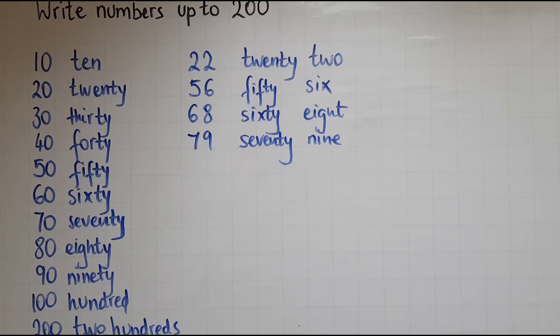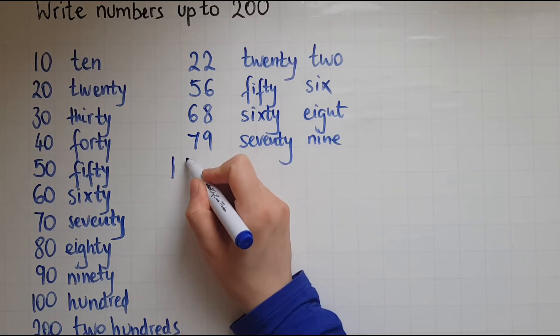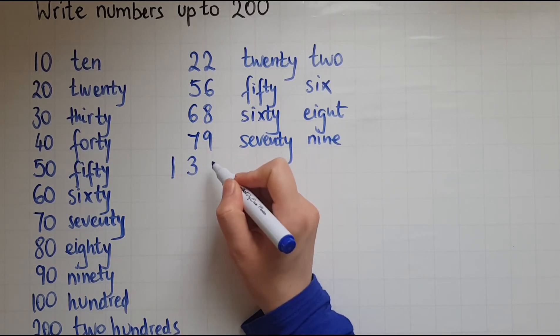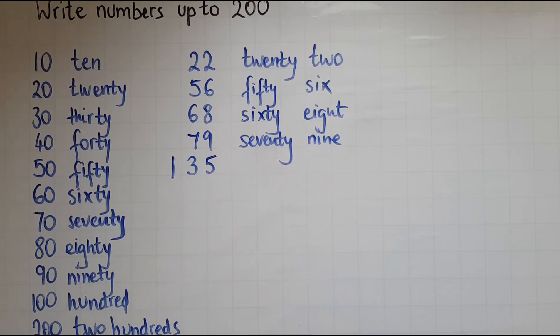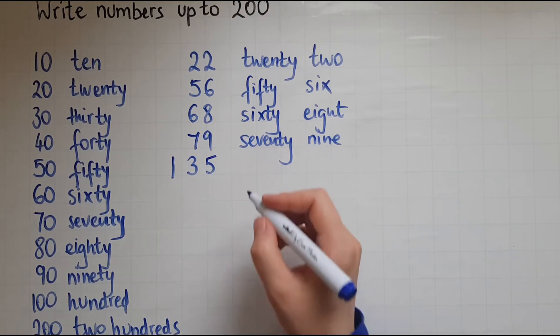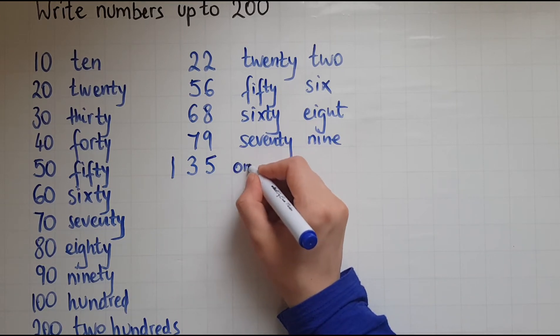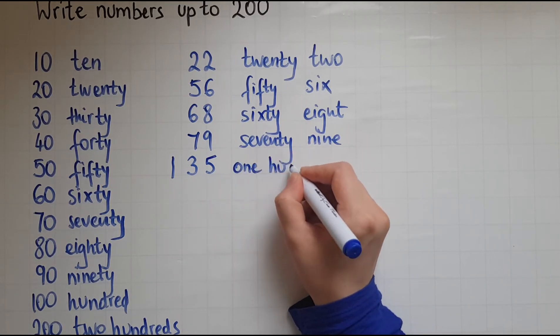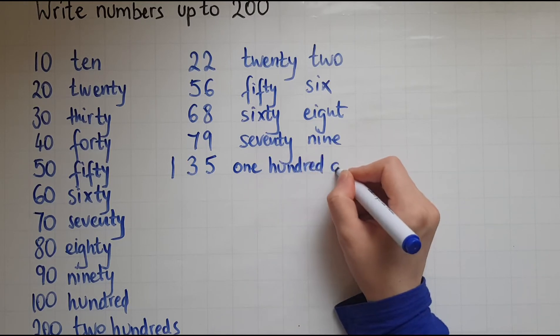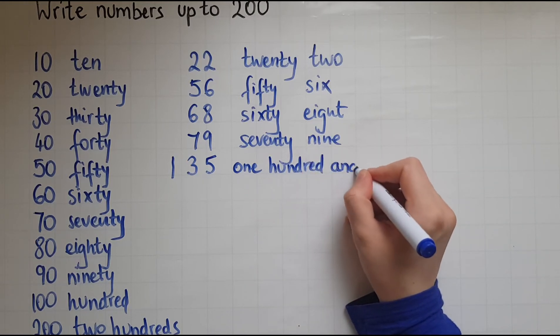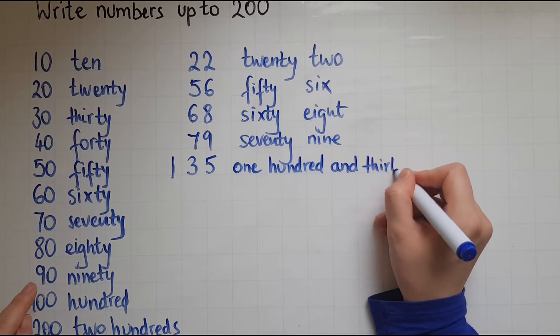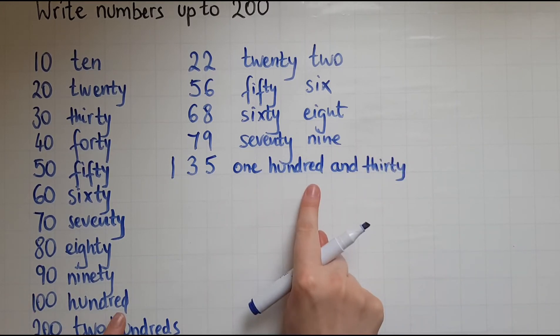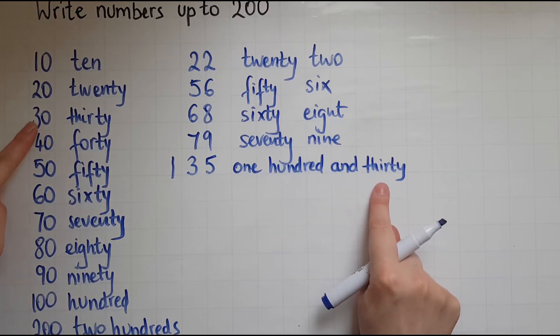If you want to write 135, so we got 130, so 3 tens and 5 units. 135, so you can say 100 or 100 and 30. So we've done the 100, we've done the 30 and the 5.